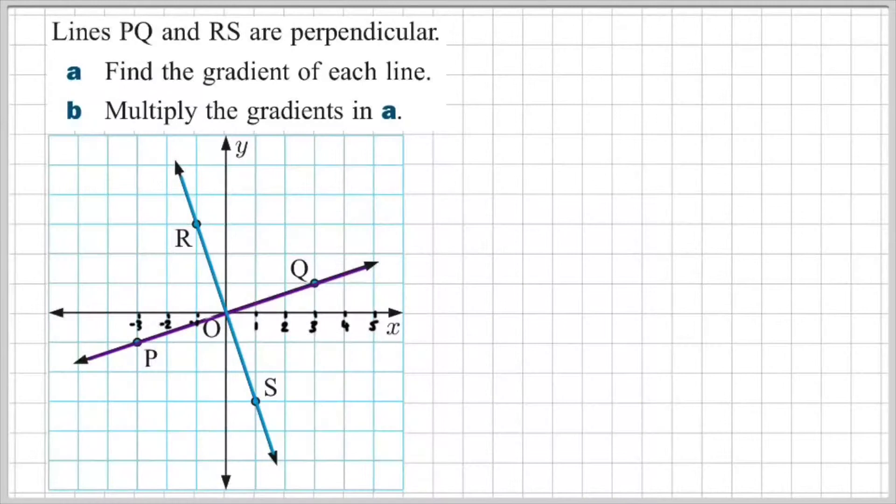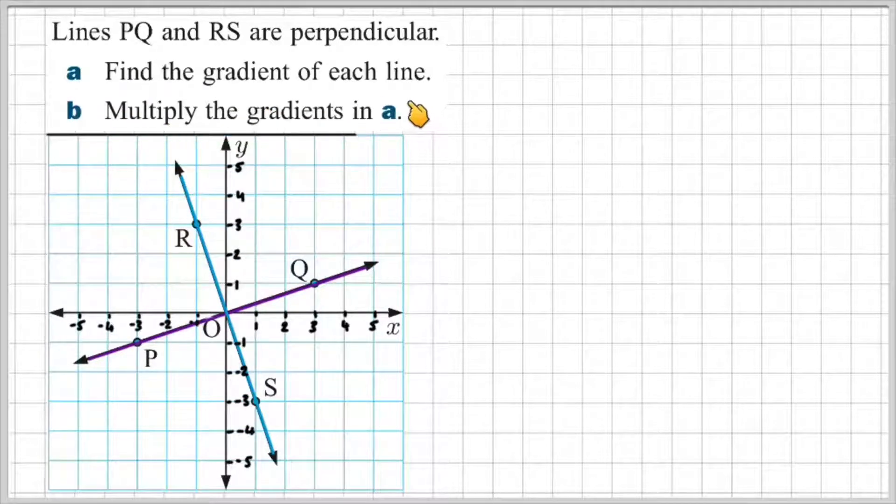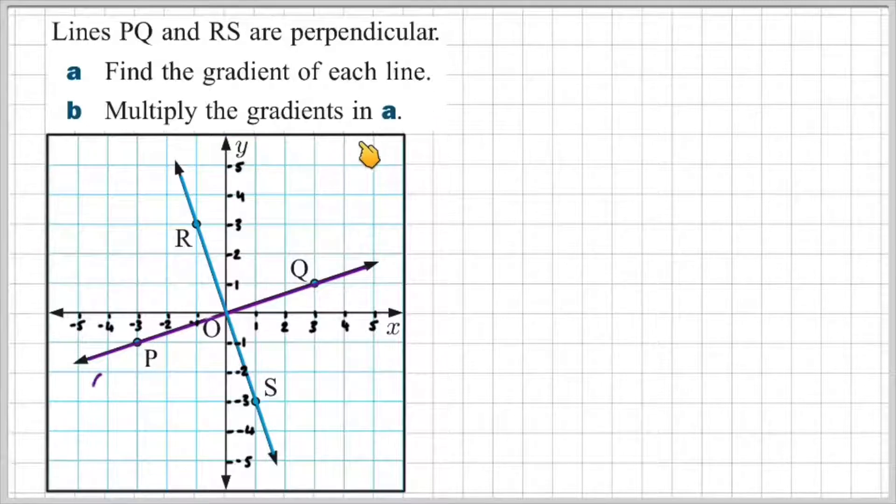So let's tackle a question. It says the lines PQ and RS are perpendicular. You can see these lines here. That's PQ and that's RS. Find the gradient of each line and then B, multiply the gradients in A.